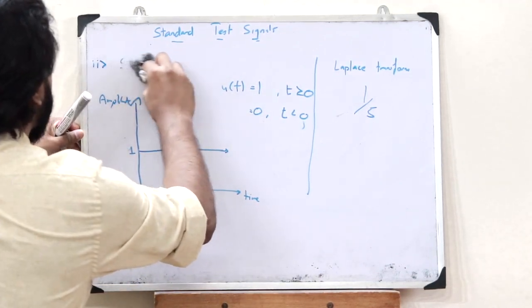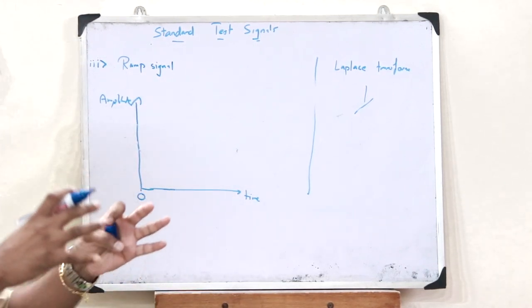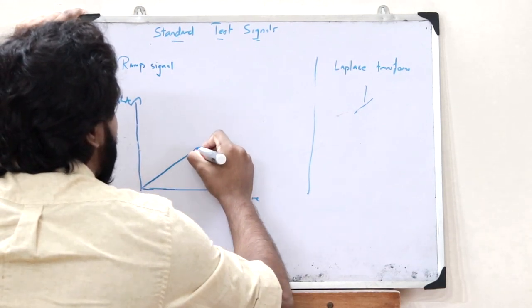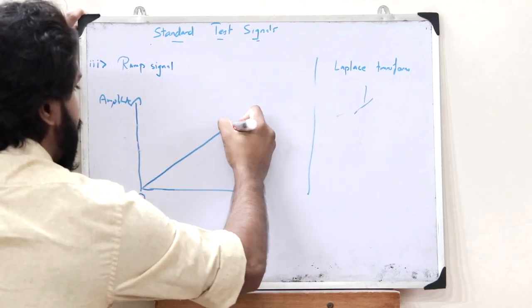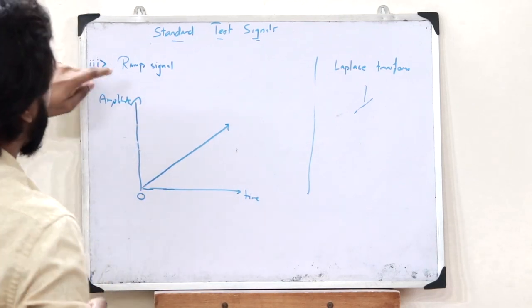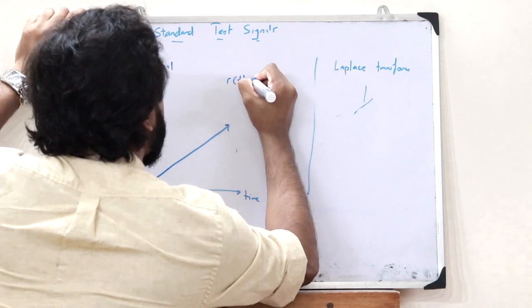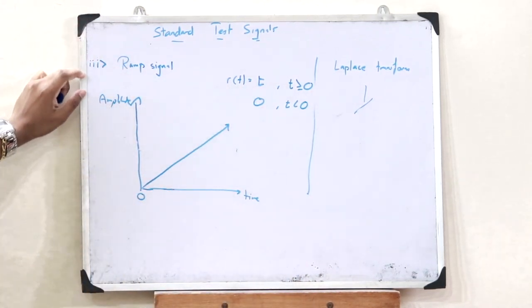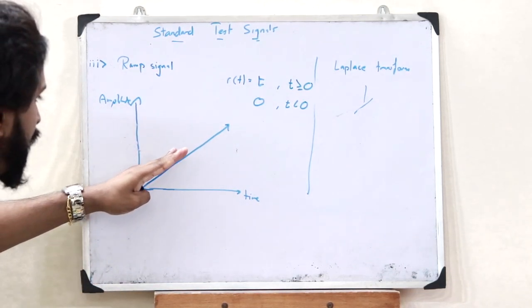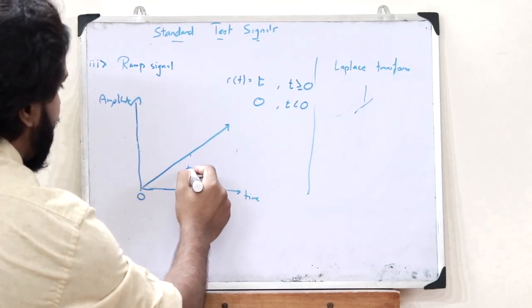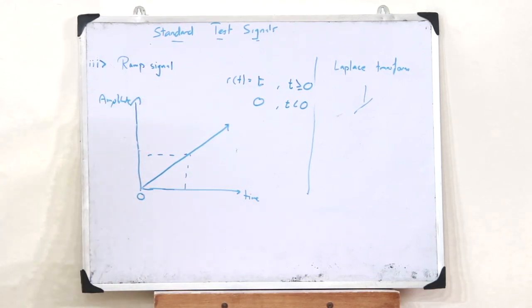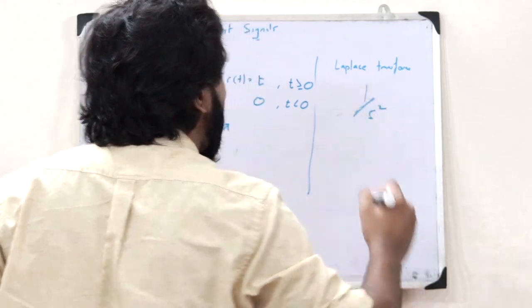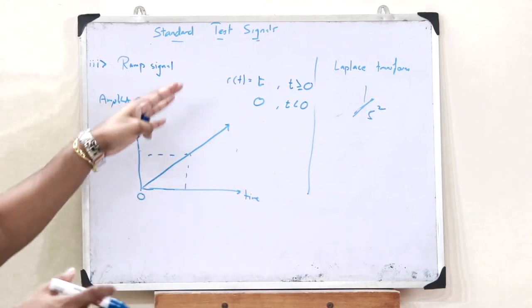Next, let us see what a ramp signal is. A ramp signal is a signal that looks like a ramp — from 0, as time increases, the amplitude of this signal would be equal to the time value. That is, it is ramping up. We can denote it as R(t) equals t when t is greater than or equal to 0, and R(t) equals 0 when t is less than 0. On taking the Laplace transform of this ramp signal, we get 1 divided by s squared.